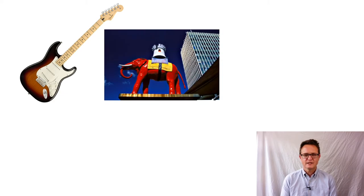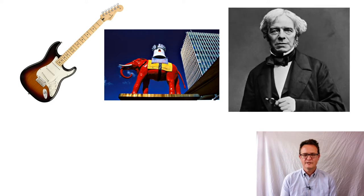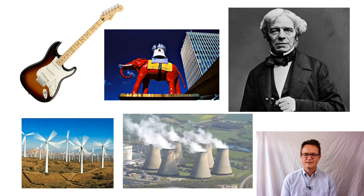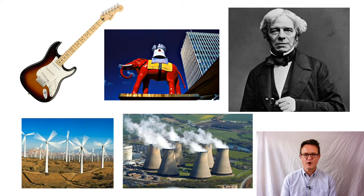So what do a Fender Stratocaster electric guitar, the Elephant and Castle, an old Victorian gentleman, wind turbines and a big old coal-fired power station have in common?